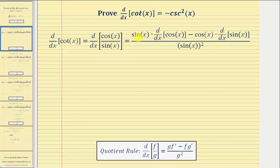the denominator, which is sine x, times the derivative of the numerator, which would be the derivative of cosine x, minus the numerator, which is cosine x, times the derivative of the denominator, which would be the derivative of sine x, all divided by the denominator squared, which would be sine x squared.